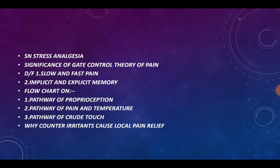Short note on stress analgesia is not that important. Significance of gate control theory of pain is important. Difference between slow and fast pain is not important. However, difference between implicit and explicit memory is very important. Flow charts on pathways of proprioception, pain and temperature, and crude touch are very important. Questions like why counter irritants cause local pain relief can also be asked.